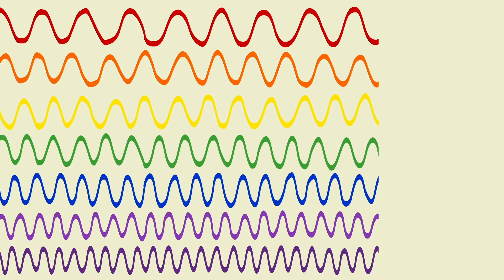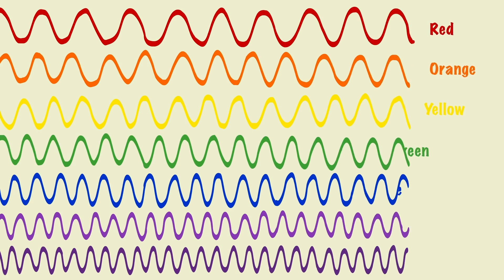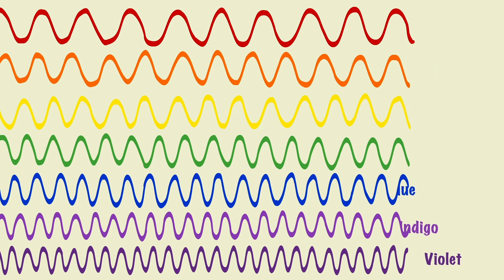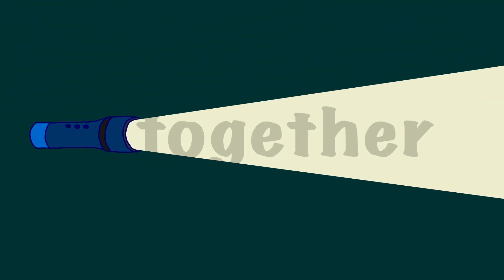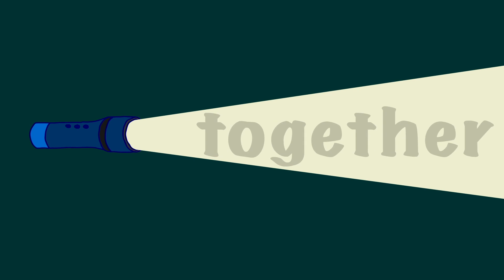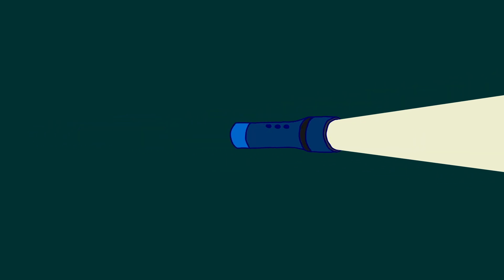White light is actually made up of waves of colour. You usually can't tell when you shine light through the air, because those wavelengths stay together. But when you shine light through glass, as we discussed in the previous video, it refracts.